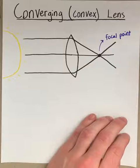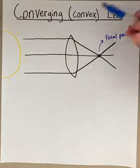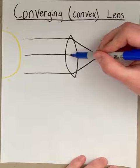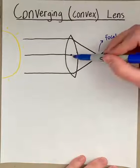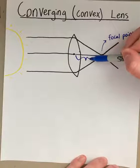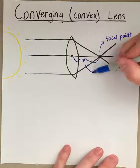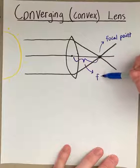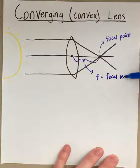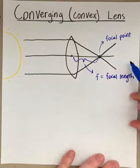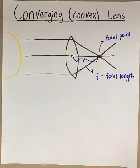Another important aspect is the distance starting from the middle of the lens to the focal point — that length is called f, or the focal length. This value is important when we get to measuring the power of certain lenses.